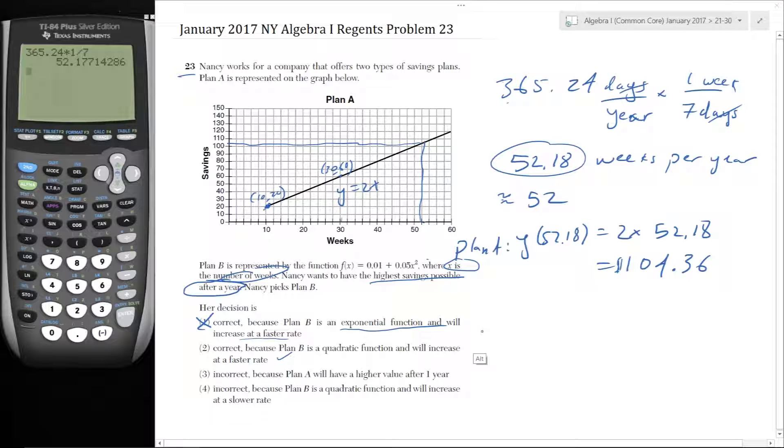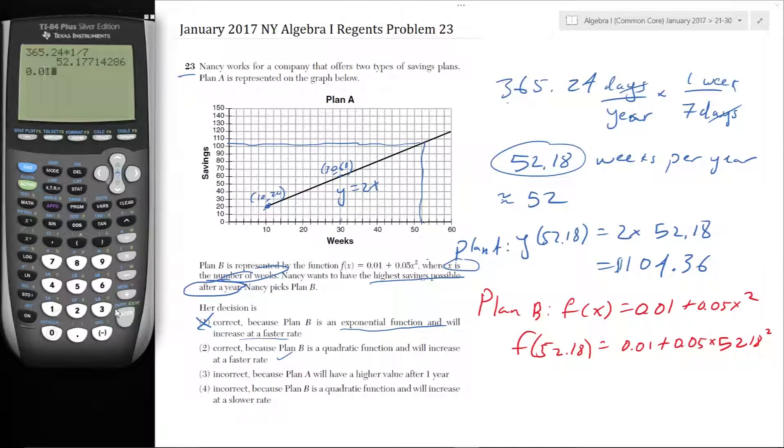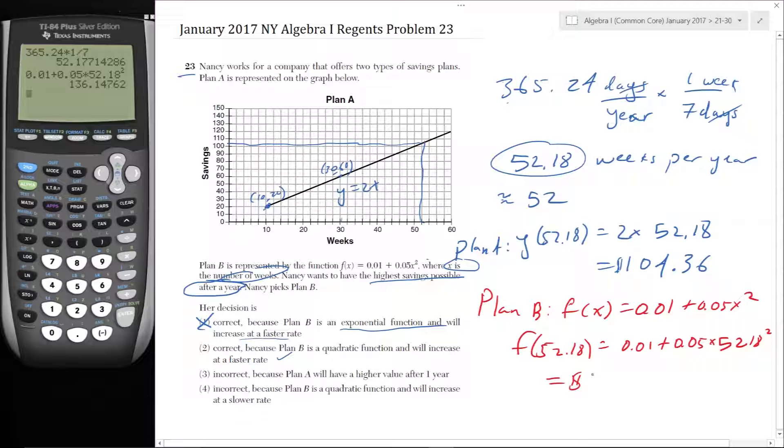Now let's go for plan B. We get f(x) = 0.01 + 0.05x^2. So f(52.18), this is equal to 0.01 + 0.05 times 52.18 squared. It's interesting that there's 52 weeks in a year. That's a very helpful number to know. So 136.147, so 15. And this balance is clearly bigger. So she did make the correct answer, which means that this is the only remaining correct answer.